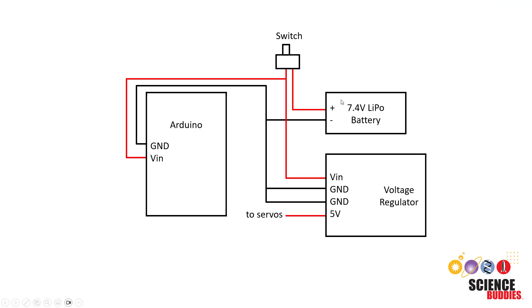Instead what you can do is use an external 7.4 volt lithium polymer battery and an external voltage regulator that has a higher current rating. So this battery serves two purposes.